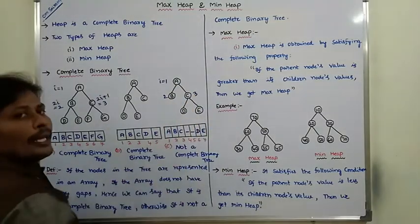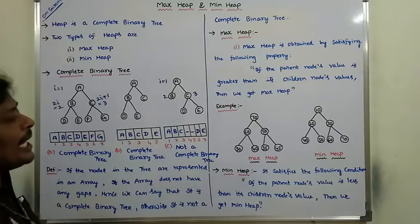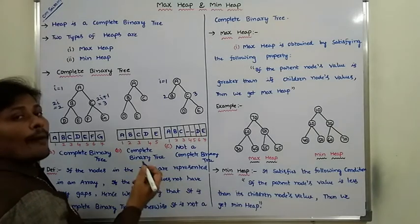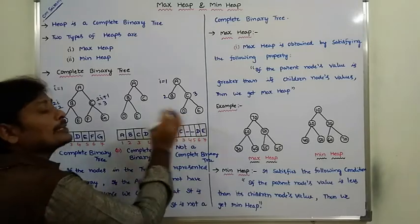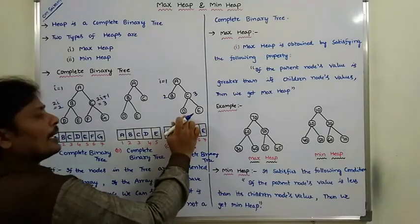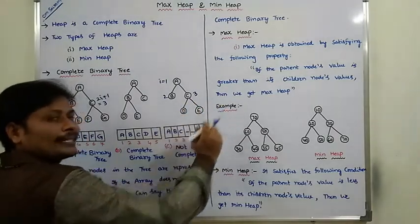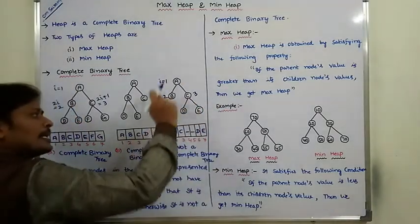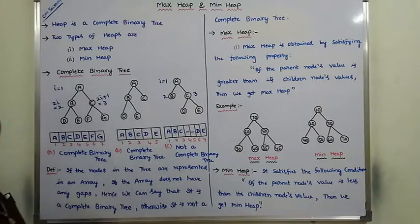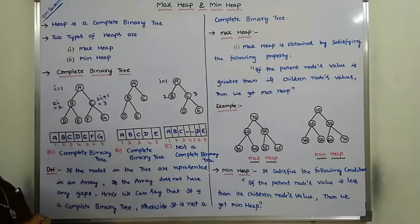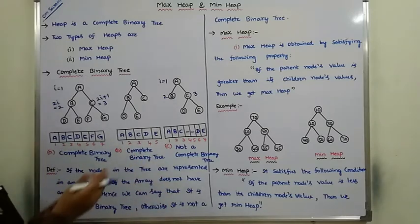Observe this tree: in a complete binary tree, the nodes in the last level are inserted as left as possible. But here, the nodes are inserted in the last level at the right-hand side. Because of that reason, it is also not a complete binary tree.